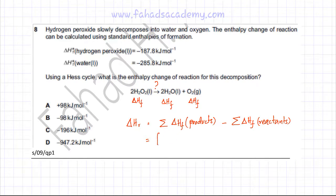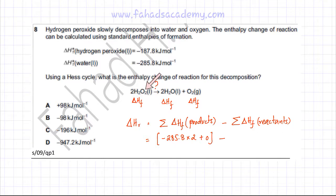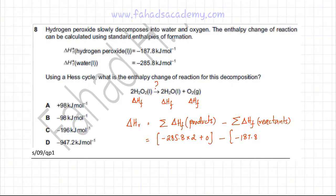For the products, the enthalpy of formation of H₂O is −285.8 kJ/mol, multiplied by two because there are two water molecules in the equation. The enthalpy of formation of O₂ is zero. For the reactants, H₂O₂ has an enthalpy of formation of −187.8 kJ/mol, also multiplied by two because there are two H₂O₂ molecules.